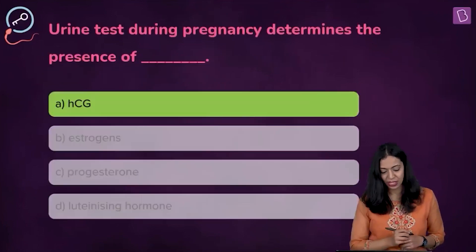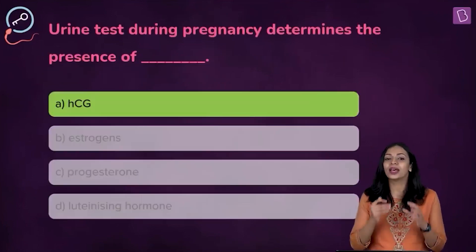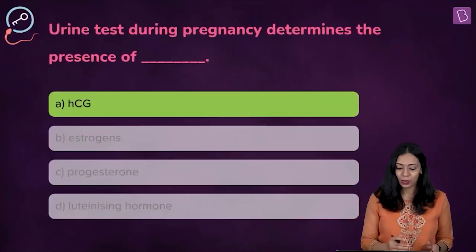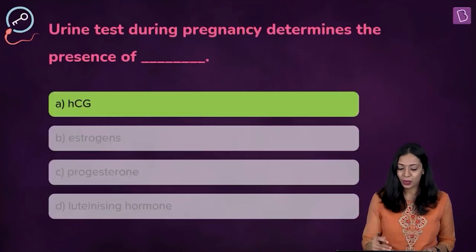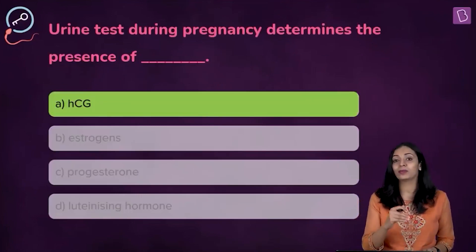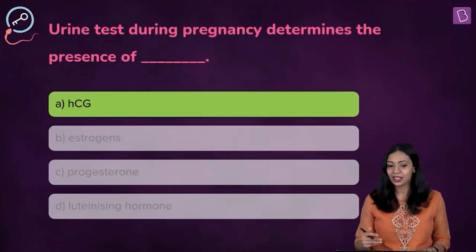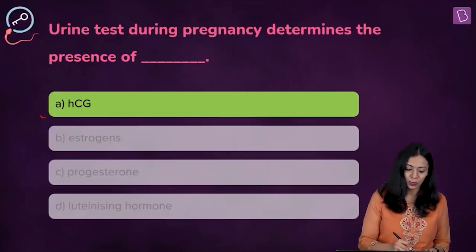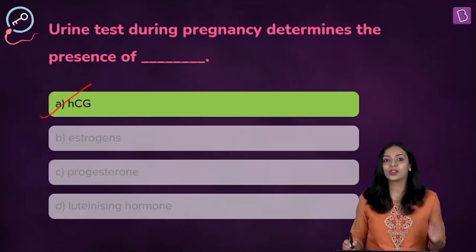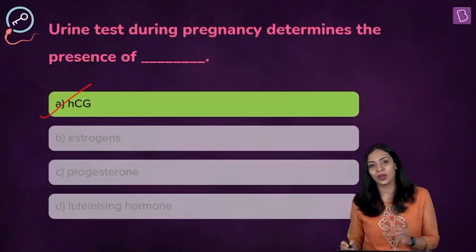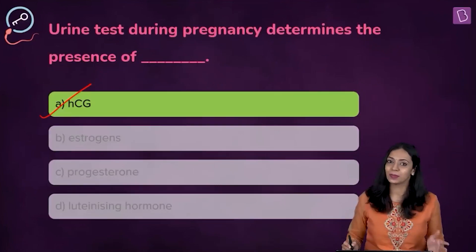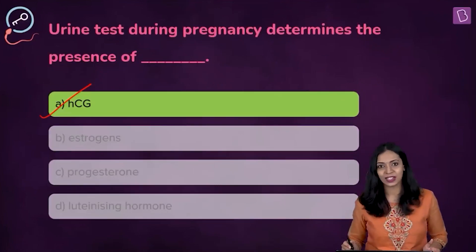So the hormone detected in urine pregnancy test kits is option A, human chorionic gonadotropin, abbreviated as HCG.